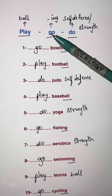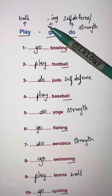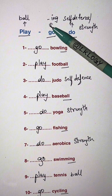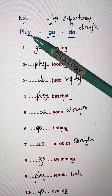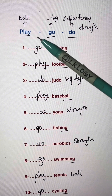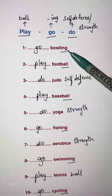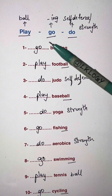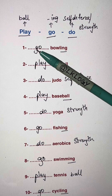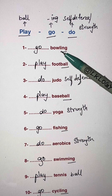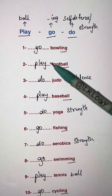Go is also used when you can do the activity individually or with a partner, and play is used for team sports. For example: blank bowling — we use go here because it has -ing: go bowling.